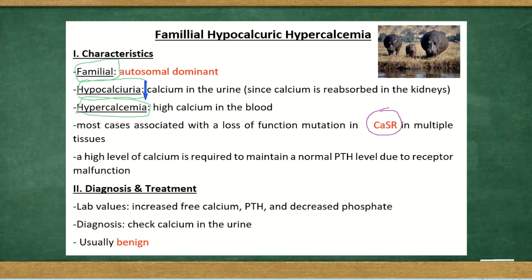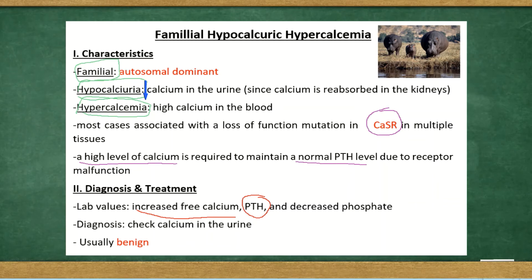In this condition, however, since the calcium sensing receptor is defective, more calcium is needed — a high level of calcium is needed to maintain a normal PTH level, because more calcium is required to tell the parathyroid gland to reduce PTH and thereby lower calcium levels. That's why we find the following lab values: increased free calcium, PTH also high, and decreased phosphate because it's inversely related to free calcium.